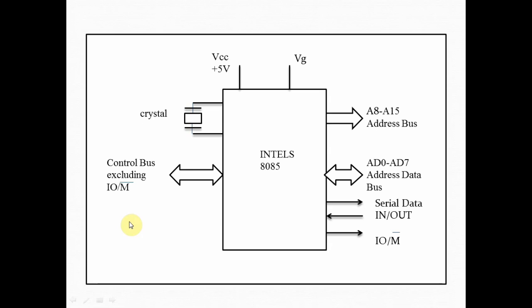Then if you see the address bus, the address bus is a 16 bit address bus that is A0 to A15 and therefore it can address the physical memory range of 2 raised to 16 is equal to 64 kilobytes. But the address bus is divided into 2 different groups.